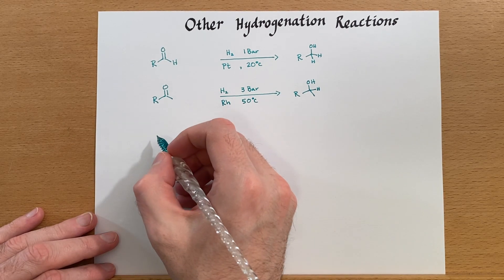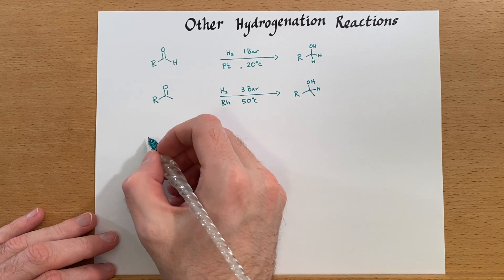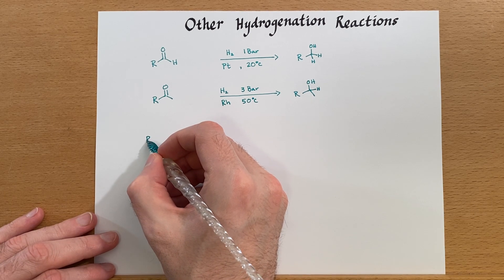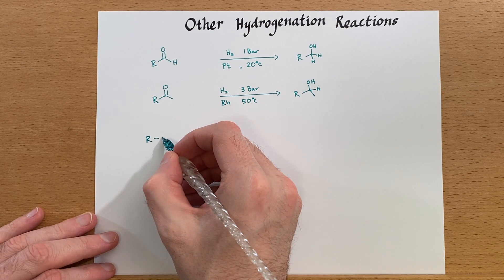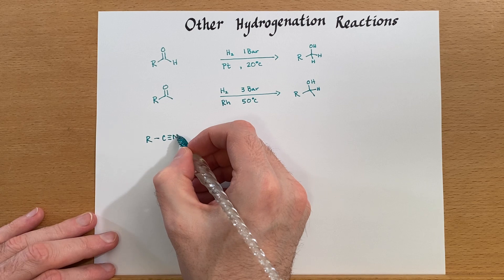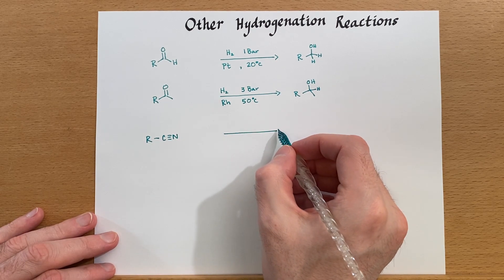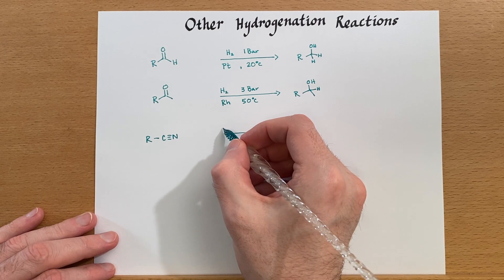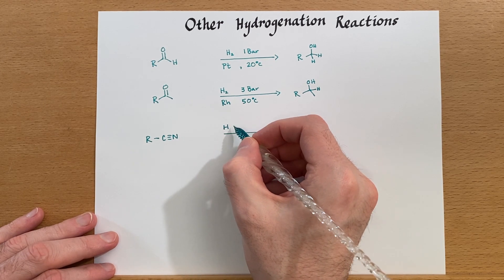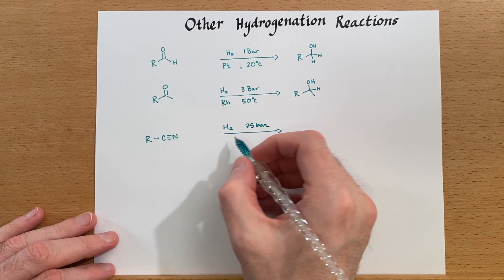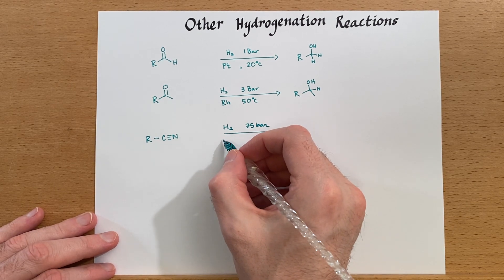Now let's look at nitrile. That's another thing that we've looked at reducing before. Let's see if we can catalytically hydrogenate it. Nitriles are less reactive than these, and so we'll need even higher pressures and temperatures, and we can use Raney nickel.